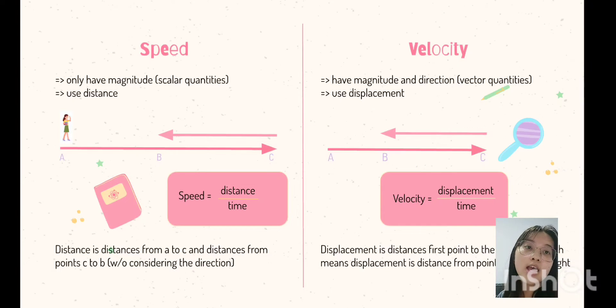Now I will explain about the differentiation of speed and velocity. Speed only has magnitude, that means speed is a scalar quantity, while velocity has magnitude and also direction, that means velocity is a vector quantity. Speed uses distance, while velocity uses displacement.